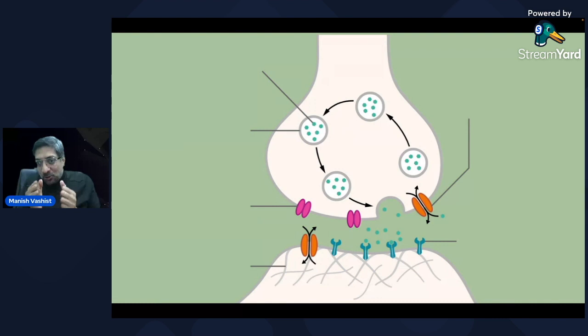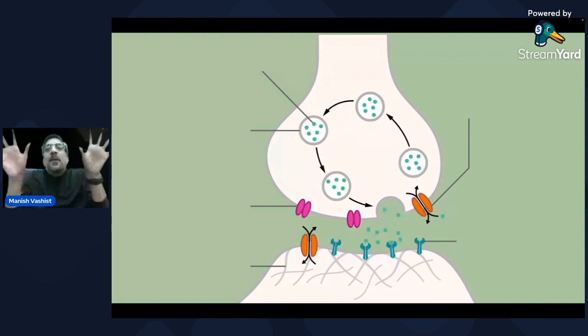If this neuron says fire, fire, fire, the other neurons start firing. And if this neuron says stop, stop, stop, the other neuron will stop firing.